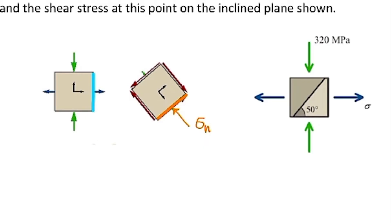So in that case, how much should I rotate the element in order to get to that point? As you can see, the angle is not 50 degrees, but it is the complement of 50, which is 40 degrees. So the angle theta that we need to use for this problem would be 40 degrees.